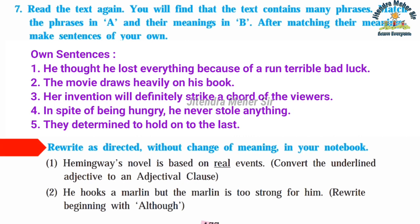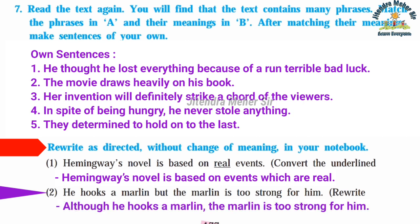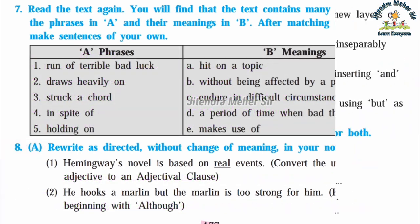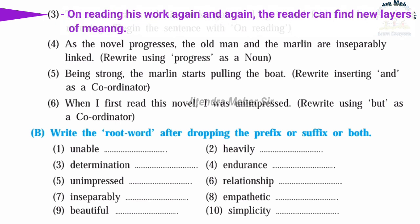Question 8A: Rewrite as directed without change of meaning. First: 'Hemingway's novel is based on real events' — convert the underlined adjective to an adjective clause. Answer: Hemingway's novel is based on events which are real. Second: 'He hooks a marlin but the marlin is too strong for him' — rewrite beginning with 'although.' Answer: Although he hooks a marlin, the marlin is too strong for him. Third: 'The reader can read his work again and again and find new layers of meaning' — begin with 'on reading.' Answer: On reading his work again and again, the reader can find new layers of meaning.